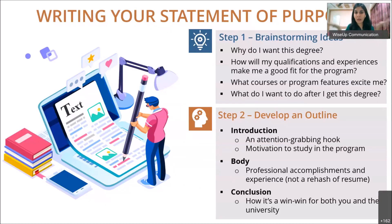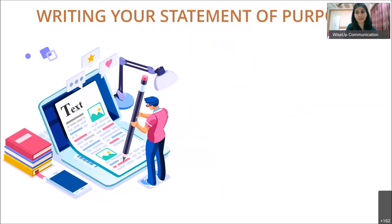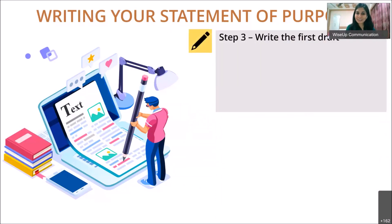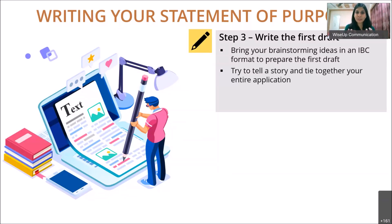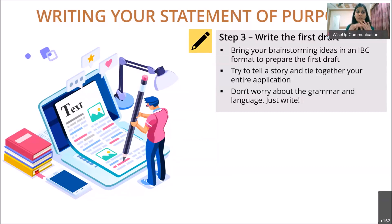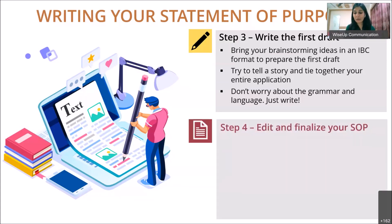The third step is to start writing. Write the first draft — take your brainstorming ideas, put them in the introduction-body-conclusion structure, and start writing. Try to make a nice story that is a window into your professional side. Don't worry about grammar, language, or word limits at this stage — just keep writing until all the information you want is in the document.